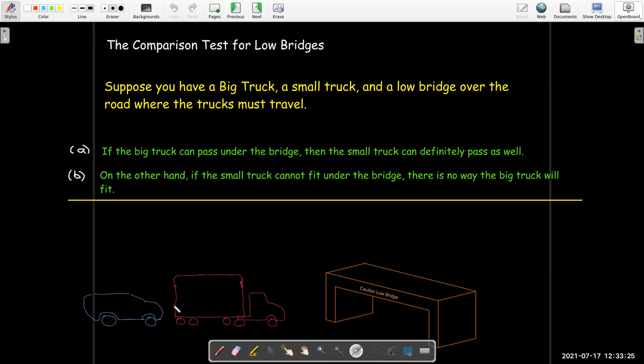So if I have two series, and the terms of one series are larger than the terms of the other series, if the smaller of the series or the terms, excuse me, the series with the smaller terms is divergent, then certainly the series with the larger terms will need to be divergent as well.